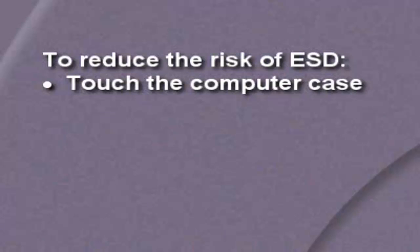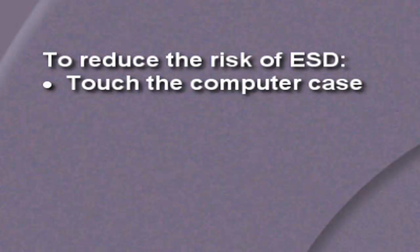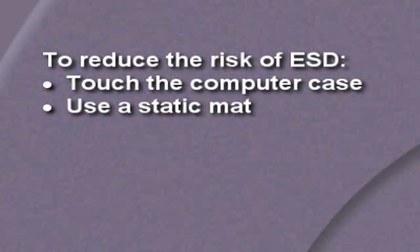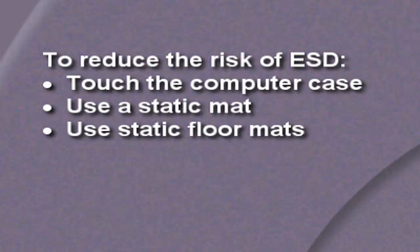It's really important that you take precautions. Number one, you need to discharge yourself before you touch any PC component. The easiest way is to simply touch the case frame of the PC system. When you do that, any difference in electrical potential between you and the case is immediately discharged. You can also use a static mat that allows you to equalize that electrical potential between you and the PC system. You can also use static floor mats or static floor materials, which are designed to keep you in balance with the electrical potential of everything around you.